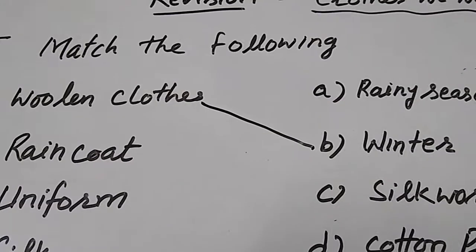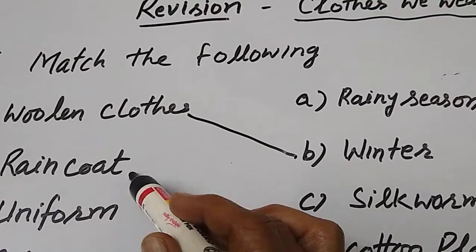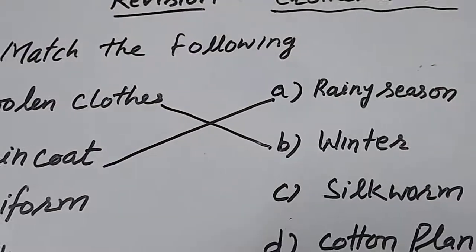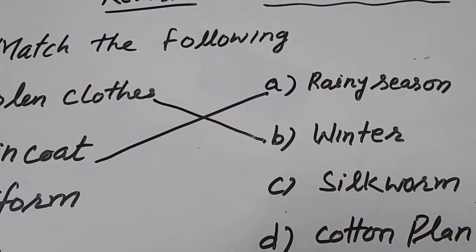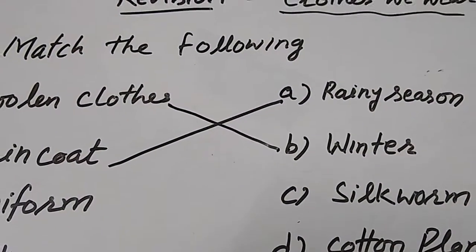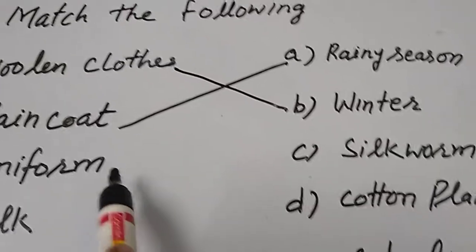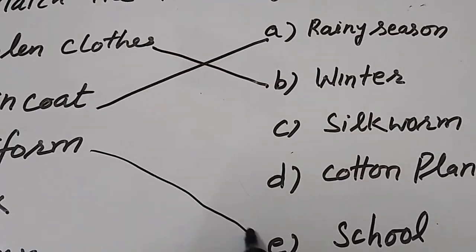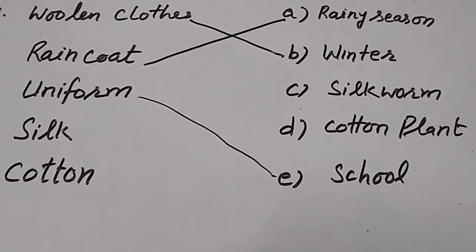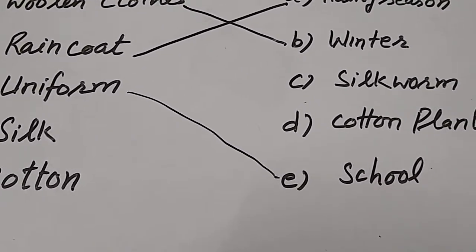Next is raincoat. Raincoat, when do we wear? In rainy season. Why do we wear raincoat? Because they protect us from wet rain. Uniform, when do you wear? When do you go to school? When you go to school, then you wear uniform.